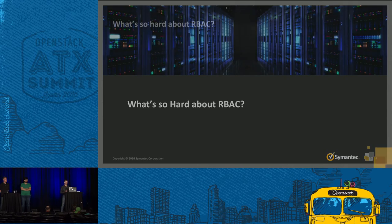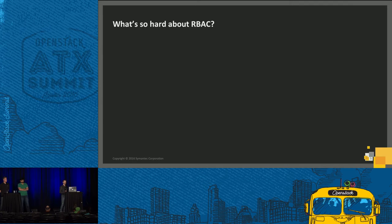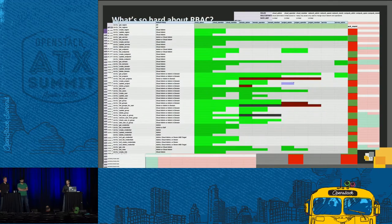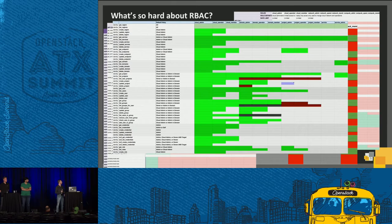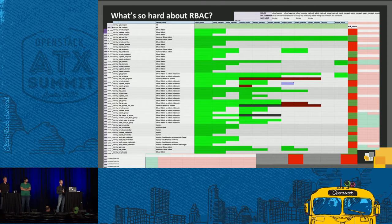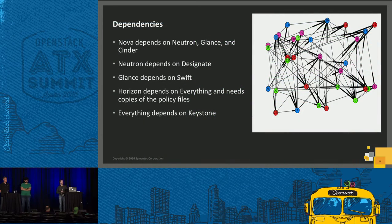But when you think about it in detail you realize there are a lot of things to think through. For one thing, just the number of APIs — and this isn't even our full list of spreadsheets. On the left side of the spreadsheet is an API that needs to be secured, and on the top row we have the role that needs to be secured. Each of these squares represents a role and what APIs that role should have access to. Just the number of APIs to think about is enormous. Then the next thing is the dependencies between components.